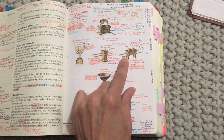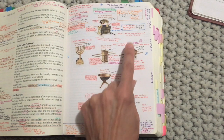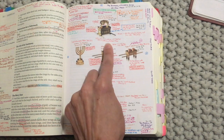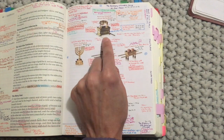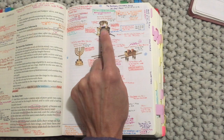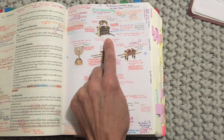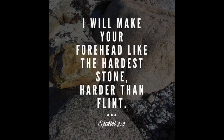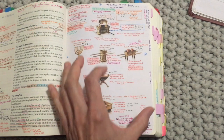Moving into the holy place, we come to the table of showbread and think of our spiritual need — asking God to fill us with his word, like the Lord's Prayer: 'give us this day our daily bread.' We move to the golden candlestick and ask God to help us spread his light to the world. At the altar of incense, we pray for others. In the most holy place, at the ark of the covenant where the Shekinah glory would be, we thank God for what he's done, and ask him to write his laws in our hearts and minds — not in a legalistic way, but sealed harder than flint.